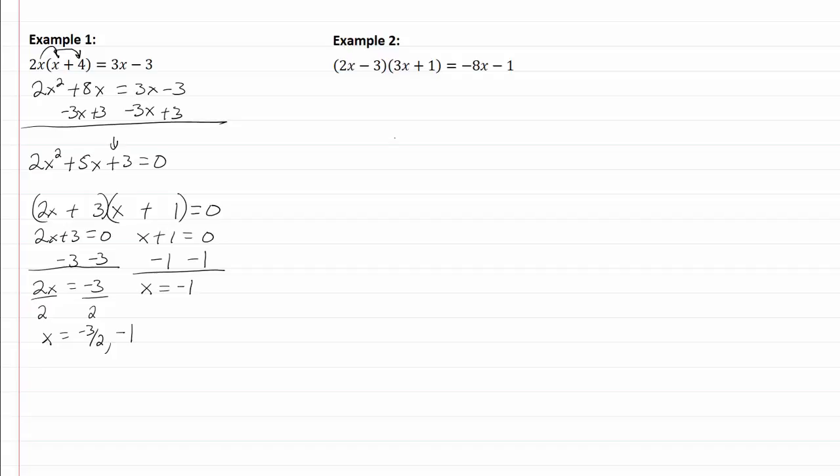Let's take a look at example two. Well this one here I'm going to have to FOIL, so taking the first terms I get 6x squared. Taking the outside I get 2x, taking the inside I get negative 9x and taking the very last ones I get a negative 3. And this is going to equal negative x minus 1.